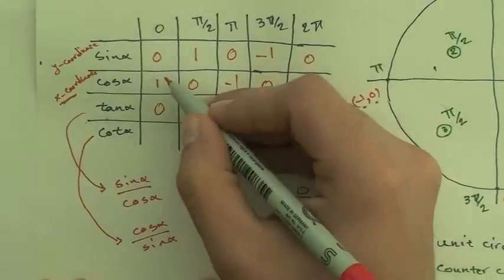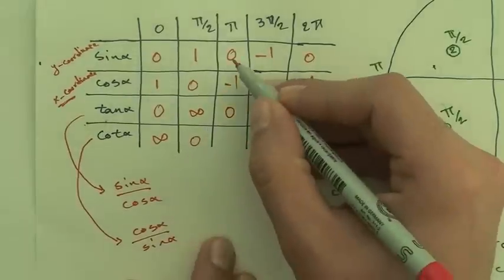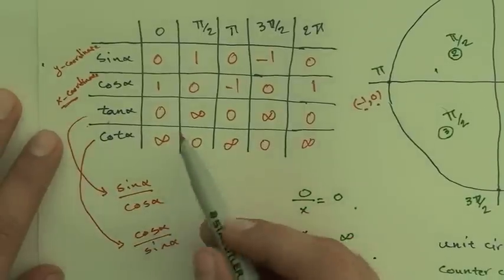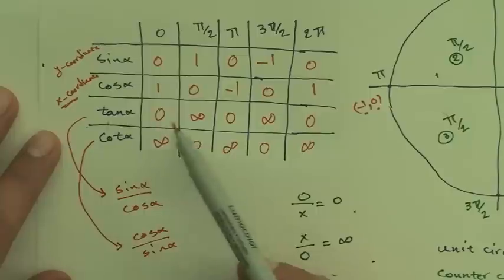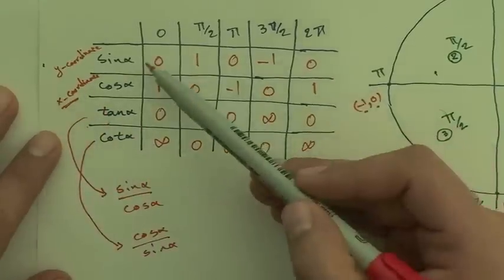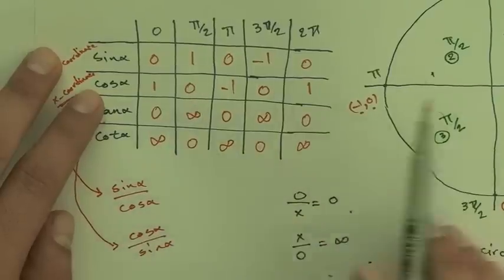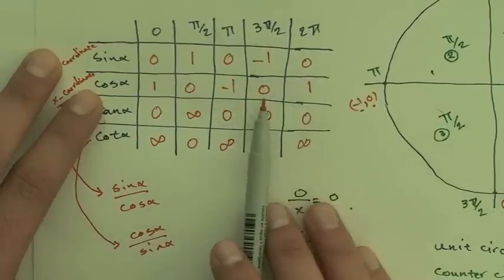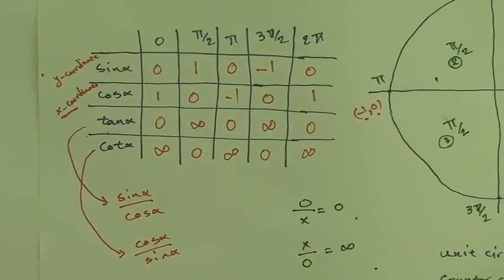For cot, it's the inverse: cos over sine. Cot(0) = 1/0 = infinity; cot(π/2) = 0/1 = 0; cot(π) = −1/0 = infinity; cot(3π/2) = 0/(−1) = 0. Notice that cot is the inverse of tan. Also, looking at the table, sine and cosine follow the same pattern but cosine is shifted one unit to the left.